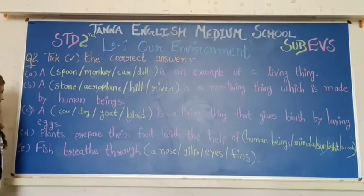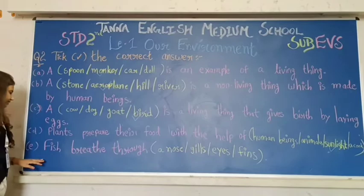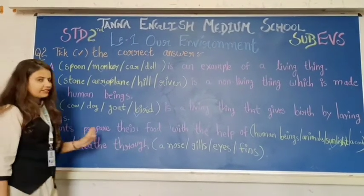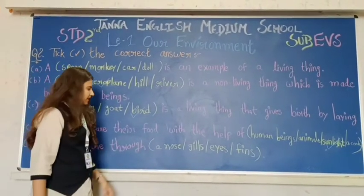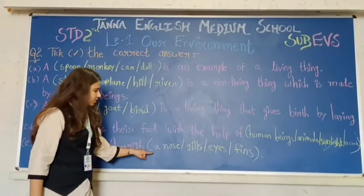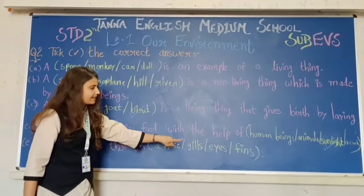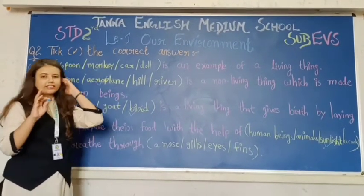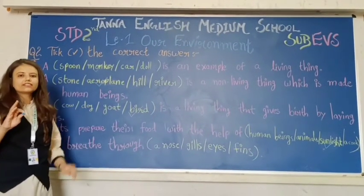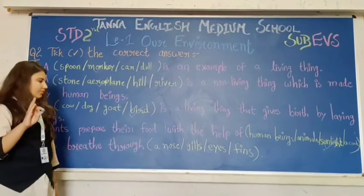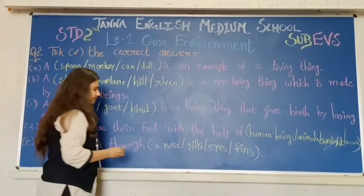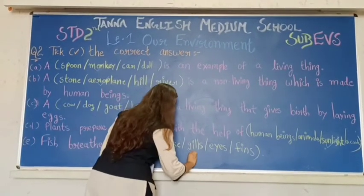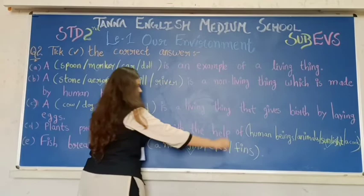Last question is: fish breathe through dash. Options are nose, gills, eyes, fins. And your correct answer is gills. So we will write gills.